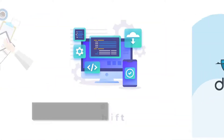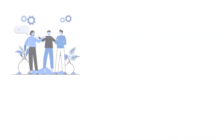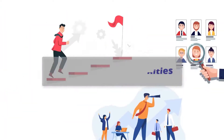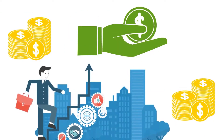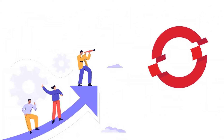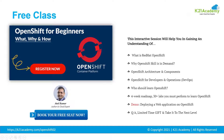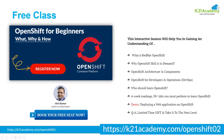They'll cover why more than 50 percent of Fortune 100 companies are now using OpenShift to run microservices and containerized applications, along with job and salary studies and how much you can earn working on OpenShift. The course includes architecture and components of OpenShift, an eight-week roadmap, and 30-plus step-by-step hands-on labs. There is also a limited-time gift for action takers, so register for the two-hour free class at k21academy.com/openshift02.